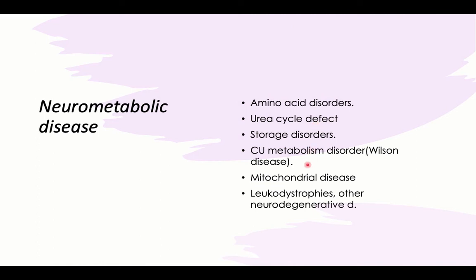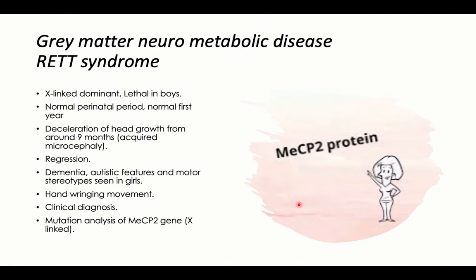This includes disorders in amino acid metabolism, urea cycle defects, storage disorders like mucopolysaccharidosis, Gaucher, and others; disorders in copper metabolism as in Menkes disease and Wilson disease; and mitochondrial disease characterized by profound energy failure and white matter dystrophy associated with neurocognitive decline and gray matter degeneration. Investigations for the metabolic profile will be discussed in the metabolism chapter.